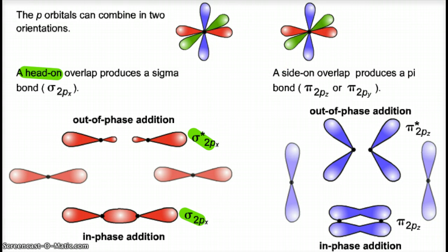More importantly to us is the side-on overlap, and we'll produce a pi bond. When we produce a pi bond, we're going to see these in our double and triple bonds. We can have pi star if it's out of phase addition, or just regular pi if it's in phase.